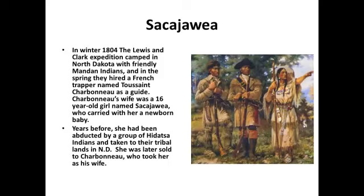In the winter of 1804, the expedition camped in North Dakota with friendly Mandan Indians. In the spring, they hired a French trapper named Toussaint Charbonneau as a guide. His wife was a 16-year-old girl named Sacagawea, who carried a newborn baby. Years before, Sacagawea had been abducted by Hidatsa Indians and taken to their tribal lands in North Dakota, then sold to Charbonneau, who took her as his wife. He essentially purchased her as a slave, and she bore him a child.